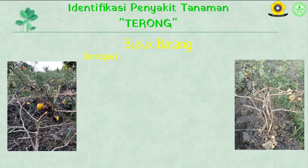Serangan jamur diawali dengan jatuh dan melekatnya konidia pada jaringan inang. Pada kondisi yang sesuai, konidia akan berkecambah dan membentuk tabung infeksi yang digunakan untuk menembus jaringan inang. Gejala pada penyakit busuk batang yaitu batang yang terkena cendawan ini akan mengalami kerontokan pada daun, dan pada bagian batang ada yang busuk. Lama-kelamaan jika tidak dikendalikan, batang akan rapuh dan tanaman akan mati.